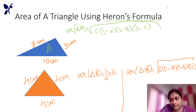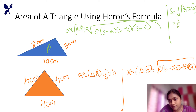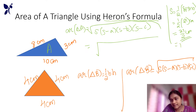What is the semi-perimeter? Half into perimeter. The perimeter is 8 plus 3 plus 10 centimeters. The semi-perimeter is half into 21, which is 21 by 2, giving us 10.5 centimeters.